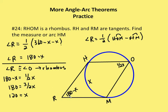If arc HM is X degrees, then inscribed angle O is half that, so angle O = X/2. In a rhombus, opposite angles are congruent, so angle R = angle O: 180 − X = X/2. Solving for X gives X = 120 degrees. So arc HM is 120 degrees.